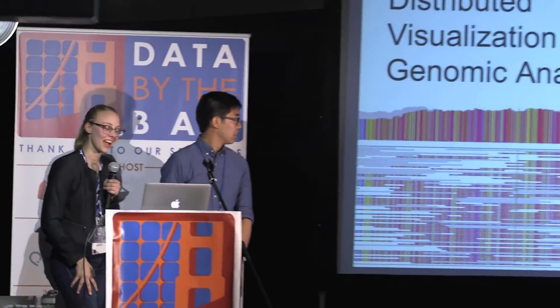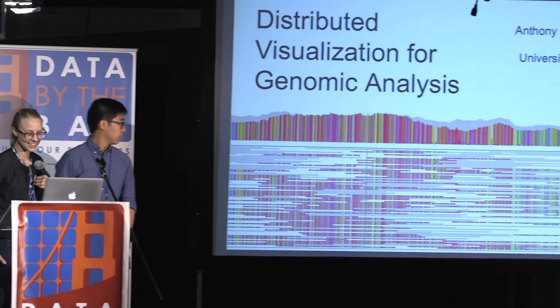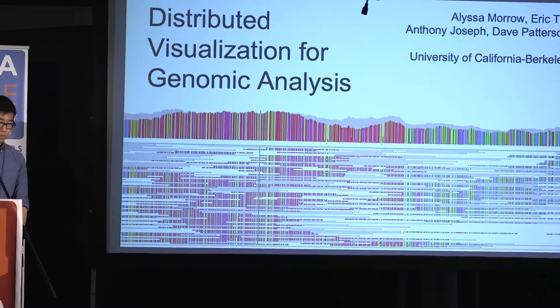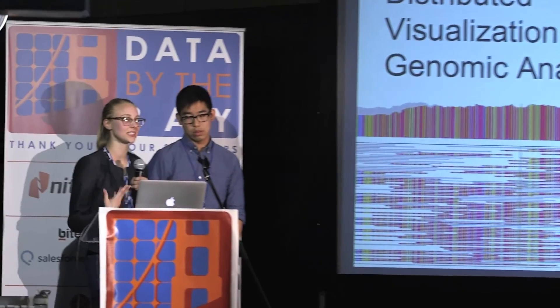During Q&A, a question was asked about the visualization colors. In the visualization there are actually six colors — one for each of the four bases (A, T, G, C), plus colors for insertions and deletions. At a pretty large range in the genome, some of the colors tend to merge together.